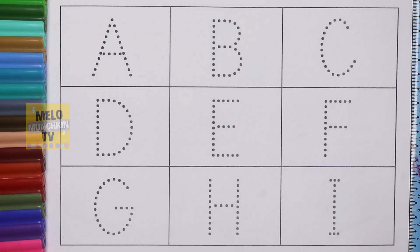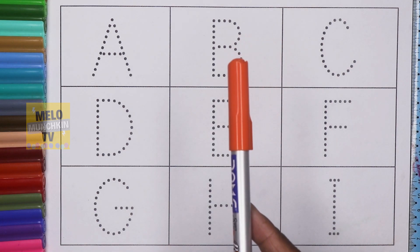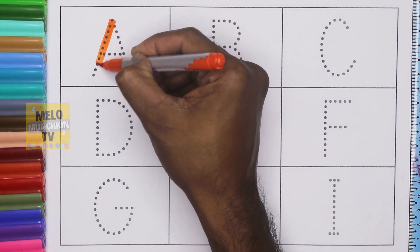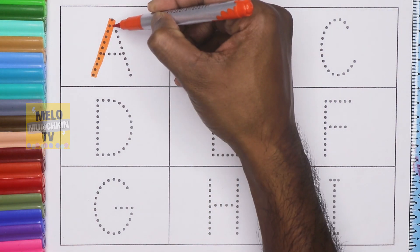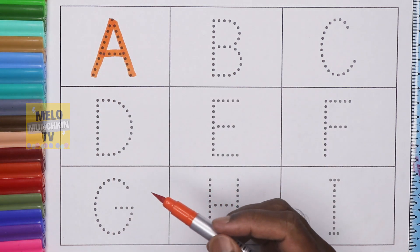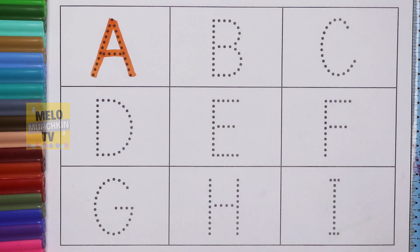Hello kids, today we'll learn alphabets from A to I, so let's get started. First I'll take orange color to write letter A. A for Apple. This is orange color.